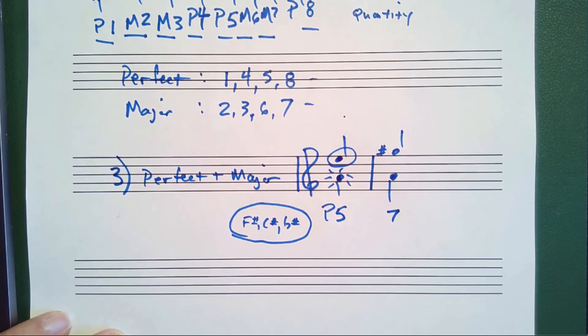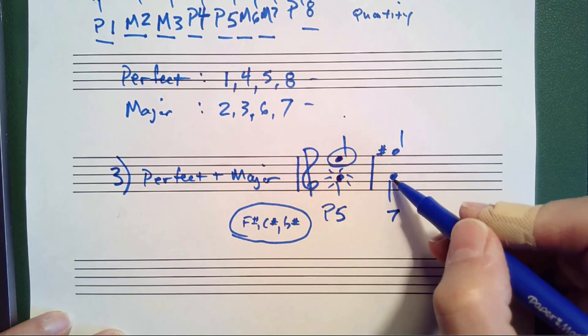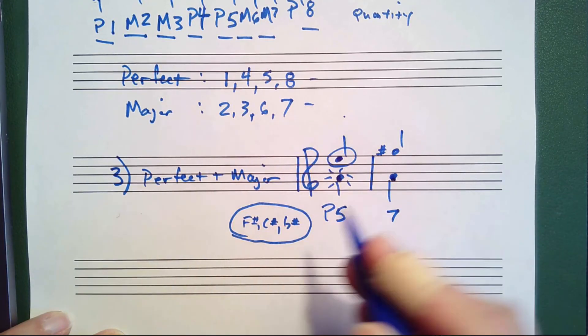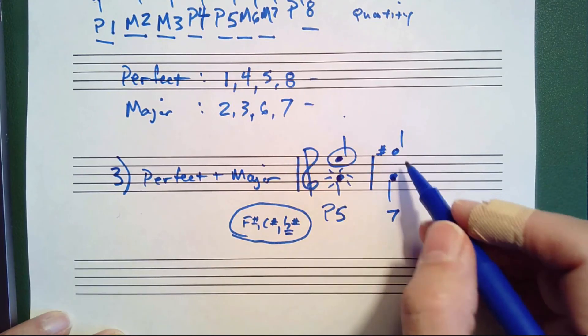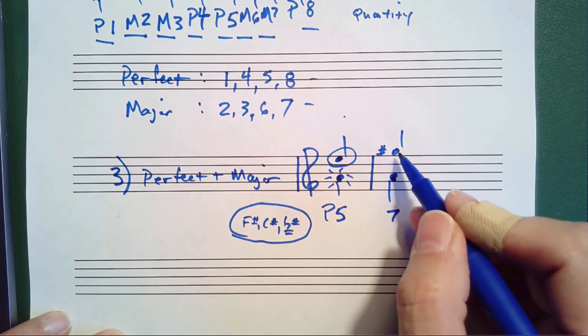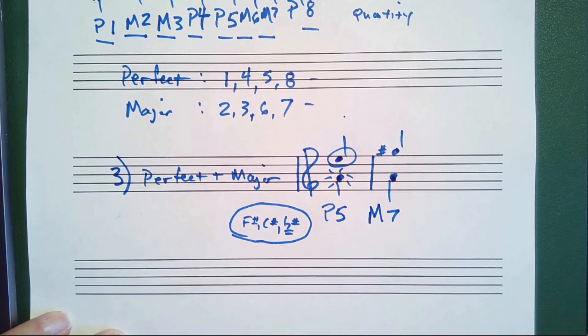Then you ask yourself, this top note, is this the seventh note of this scale? And since G sharp is in the key signature, the answer would be yes. Now, since this is the seventh note of this scale, this is a major seventh.